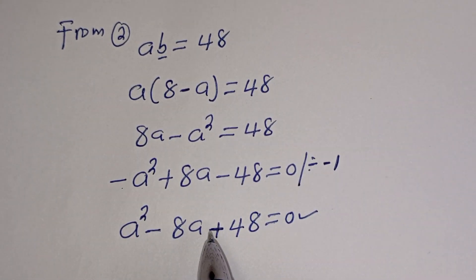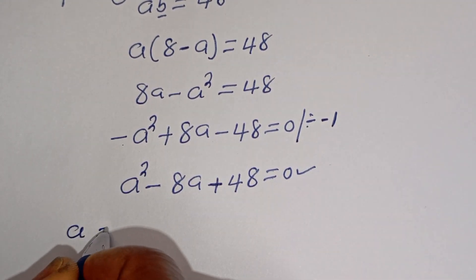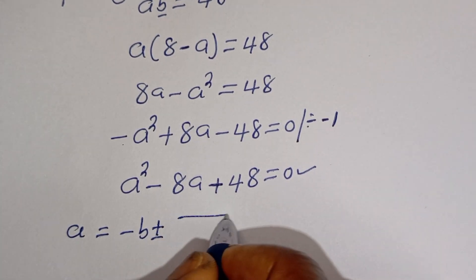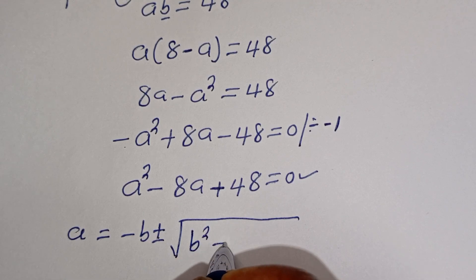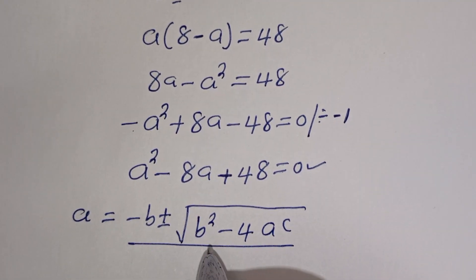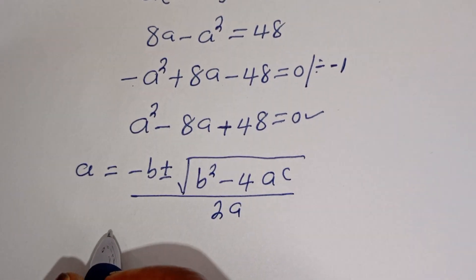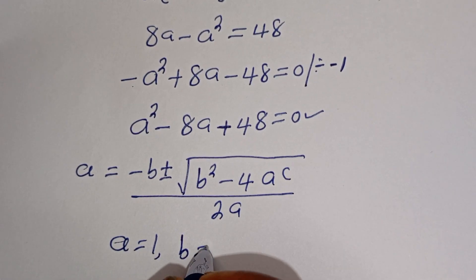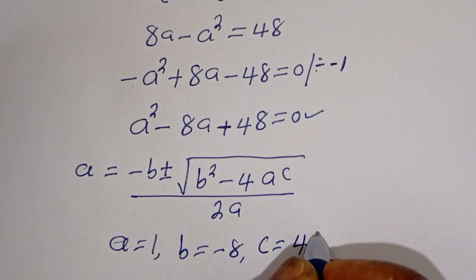Let's solve this using the quadratic general formula. The quadratic general formula is given as: x is equal to minus b plus or minus square root of (b squared minus 4ac), divided by 2a. From our equation, a is equal to 1, b is equal to minus 8, and c is equal to 48.